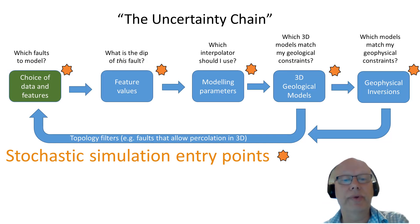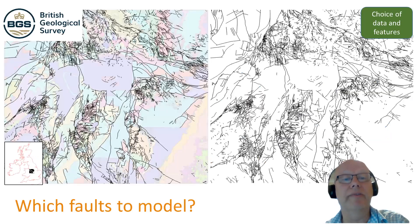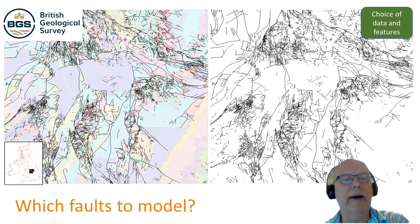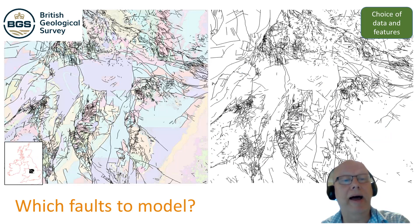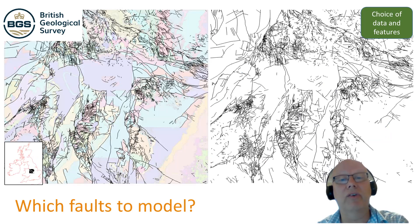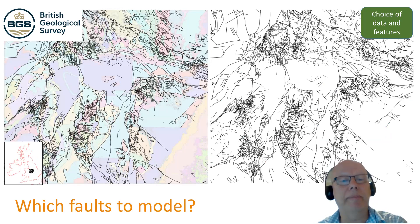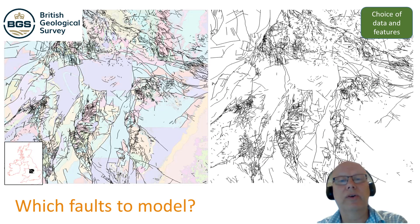I'm going to look very briefly at all of these different parts of the uncertainty chain, but I'm going to focus really very much on the first one — the choice of data and features — because it interests me a lot at the moment. I'm going to focus on faults because they're fairly easy to draw and we can look at them in 2D fairly simply. This particular map of part of the Midlands and the Peak District in the UK comes courtesy of the British Geological Survey. On the left-hand side is the geology map; on the right-hand side is the map just of the faults as mapped.